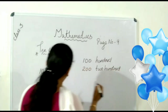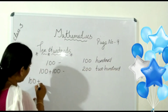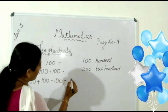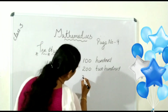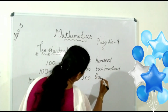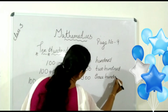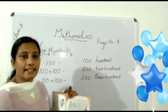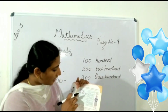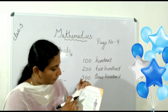Then, what about 300? 100 plus 100 plus 100 is equal to 300. Children, can you fill the table like this? 400 — together 400.